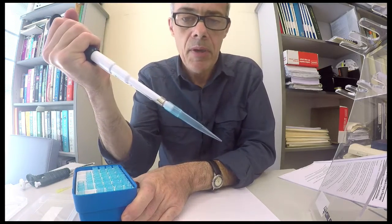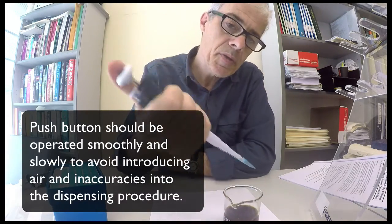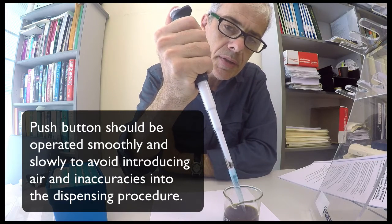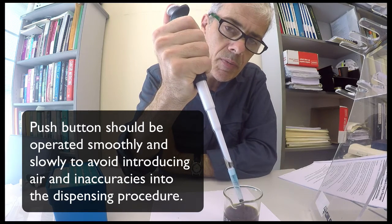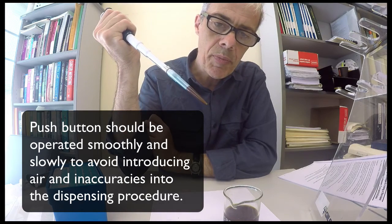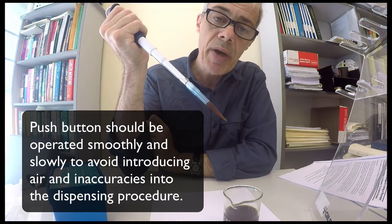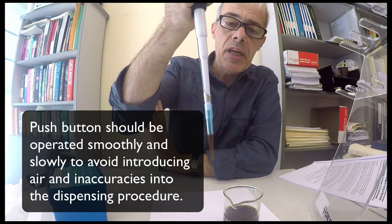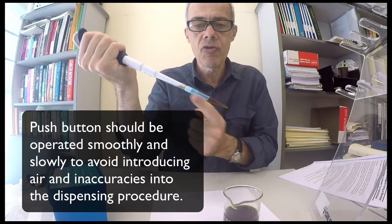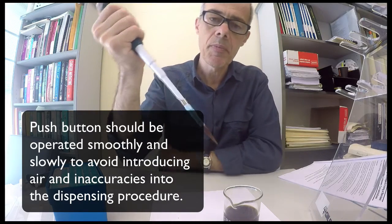Simply place your tip down to the first position here. Immerse. Slowly relieve the pressure on your thumb to draw up the 500 microliters. Keep the pipette in the vertical orientation to avoid the solution running up into the pipette.